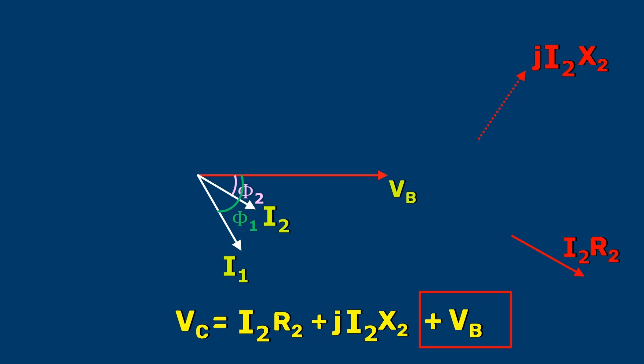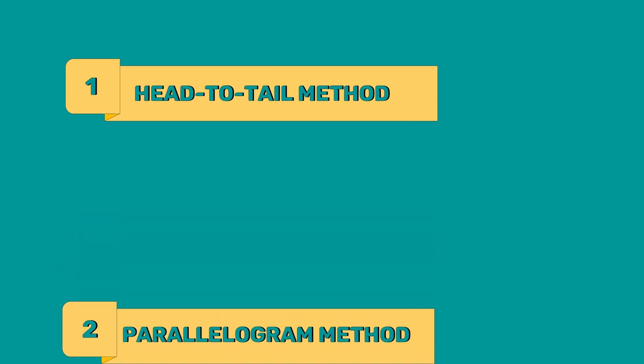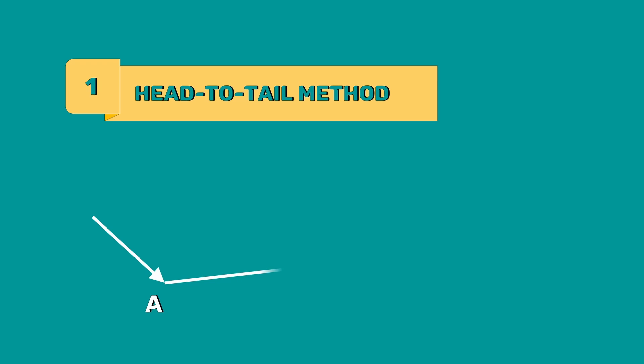VB is already present in our vector diagram. To represent VC, we need to add all these three vectors. How to add vectors? There are mainly two methods. Head-to-tail method and parallelogram method. In the head-to-tail method, the head of the vector is connected to the tail of the successive vector.